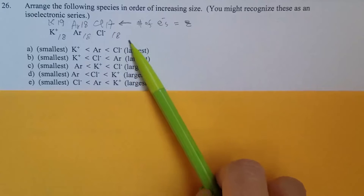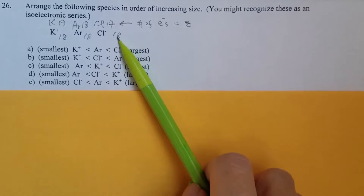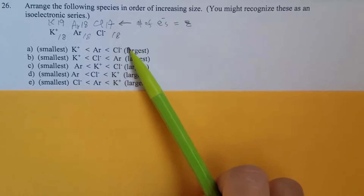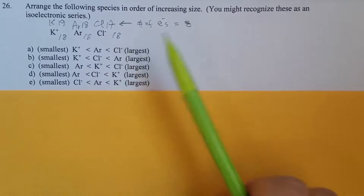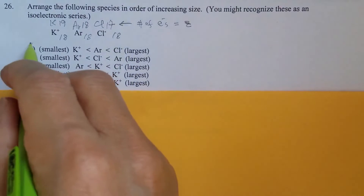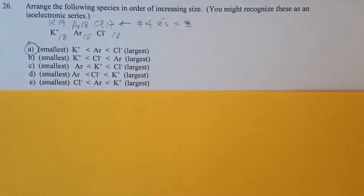It only has 18 electrons, but not 18 protons. So therefore chloride has to be the largest. That's why A is the answer for number 26.